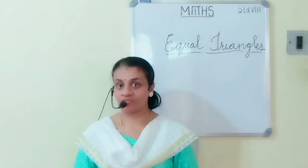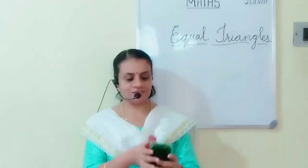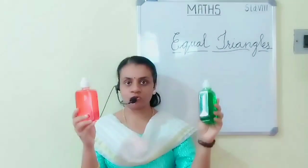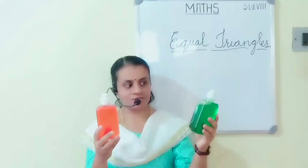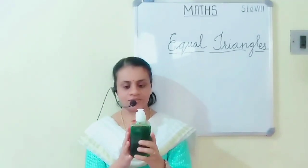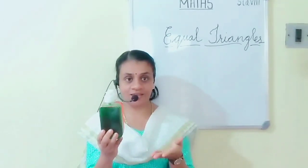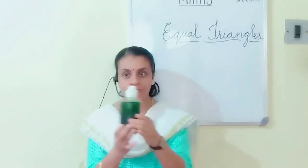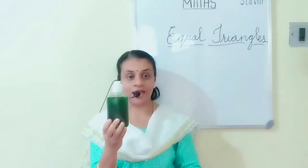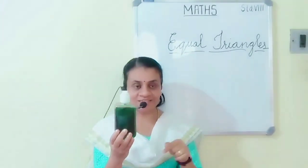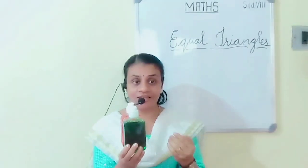We have revised triangles and the different types of triangles. Now look at these 2 bottles. There are 2 bottles with me — one is green in colour and another is red in colour. If I place one bottle over the other, please look at this from a distance. How many bottles do you feel there are? There is only one bottle in my hand — but actually there are 2 bottles. From a distance you feel there is only one bottle.